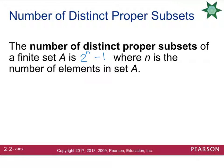Remember the only difference between a subset and a proper subset is that the two sets can't be equal. So if you're asked for the number of proper subsets, you do the same thing — take 2 raised to the number of elements in the set — but you decrease it by one, because the set itself is not allowed to equal the original set.